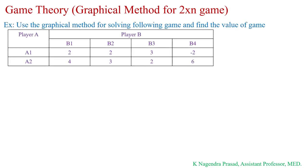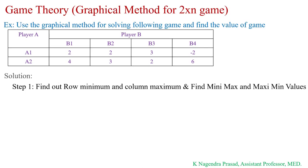Hello everyone. I am going to discuss the game theory problem for a 2×n game by the graphical method. This will be discussed with one example problem. The given game consists of two rows and n number of columns, meaning player A has two strategies and player B has more than two strategies. This type of game is called a 2×n game. For the solution, the first step is to find the row minimum and column maximum, and then find the minimax and maximin values.